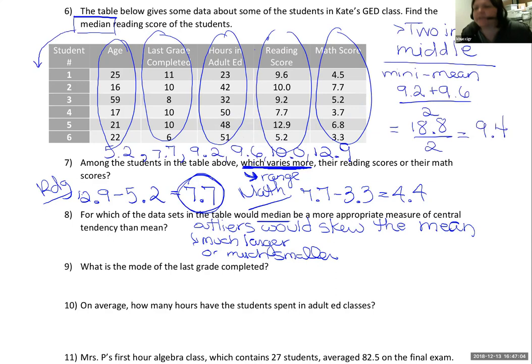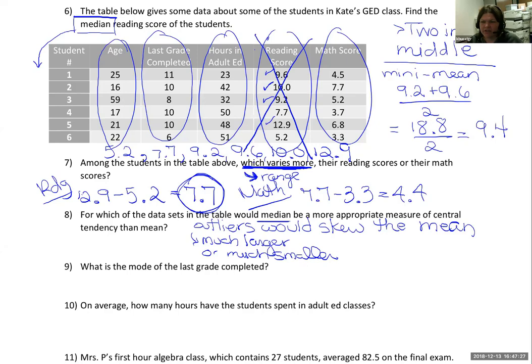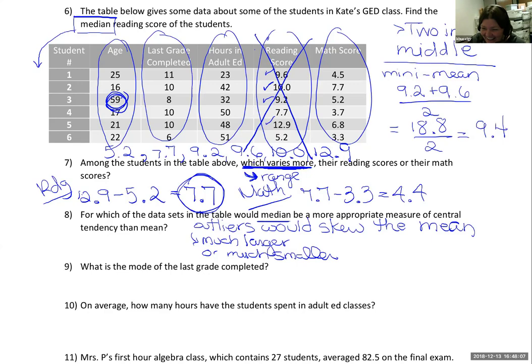Looking at the data sets — age, last grade completed, hours in adult ed, reading scores, and math scores — I'm looking for a set with a really high or low number that doesn't match the others. Looking at the ages: I see a bunch of young adults — 17, 16, 21, 22, maybe 25 — and then there's a 59-year-old, someone returning perhaps for a new career. That would be an outlier in the class. So median would be more appropriate for the age data set.